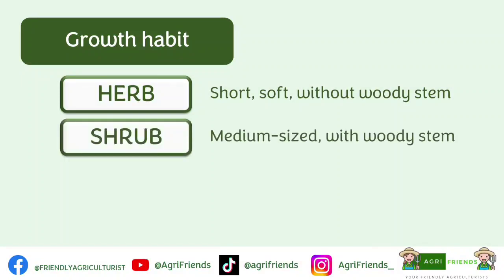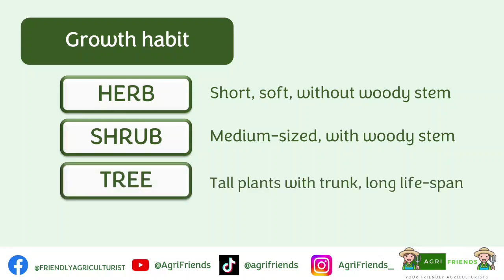Second are shrubs. Shrubs are medium-sized, woody plants that are taller than herbs but shorter than trees. Their characteristics are bushy, hard, and with a woody stem. Third are trees — big and tall plants with very thick, woody, hard stems called trunks. The trunk produces many branches that bear flowers, leaves, and fruits, though some trees like coconut are branchless and have one main stem bearing the leaves, flowers, and fruits.